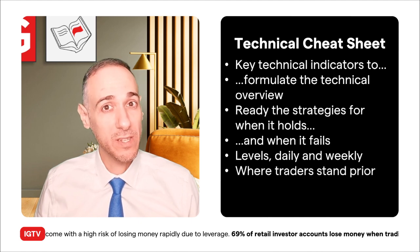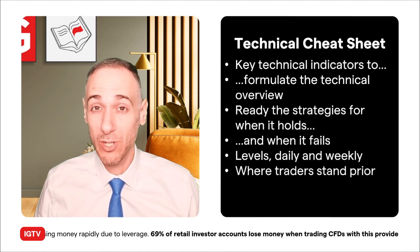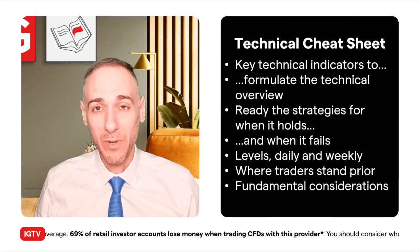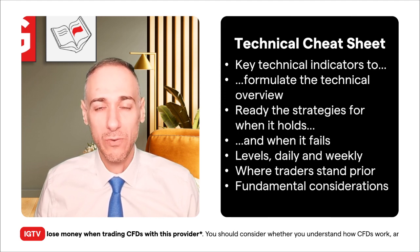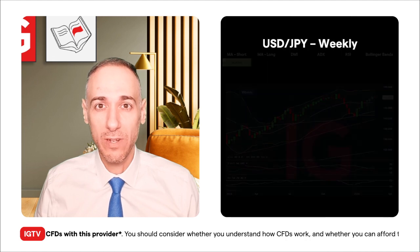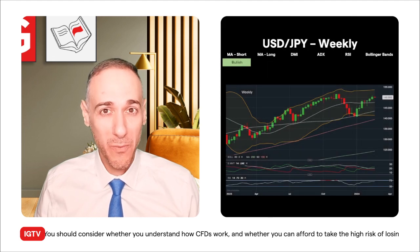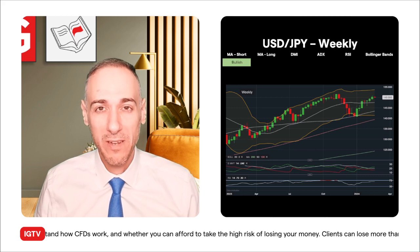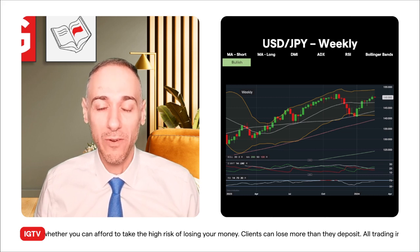And while not a sentiment study video, we are going to take a look at where traders stand, which is an interesting one for this product, as well as fundamental considerations that might throw a wrench into those key technical indicators. And for this week, we've gone for a tricky one. USDJPY's price oscillates as of doing this video near the $150 line.